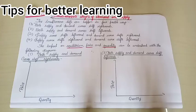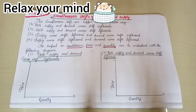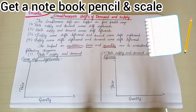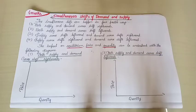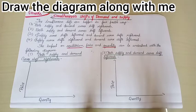Hello everyone, Namaskara. Welcome back to Seemars Academy. In this video, the topic is Simultaneous Shifts of Demand and Supply. This is one important question from Chapter 5, Market Equilibrium, for 6 marks. Without wasting much time, let's directly begin with the video.